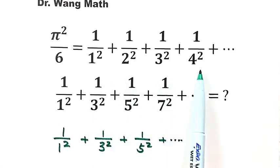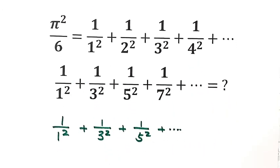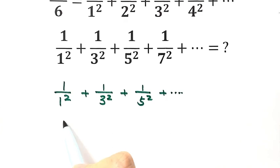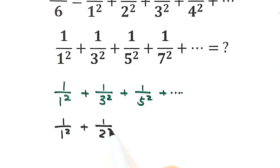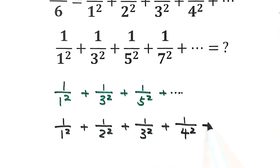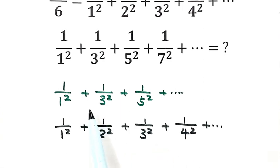Since we want to use the given condition, let's write down the full sum: 1/1² + 1/2² + 1/3² + 1/4² and so on. Now let's compare these two sums. The full sum includes all positive integers in the denominator, but the target sum includes only odd positive integers in the denominator.